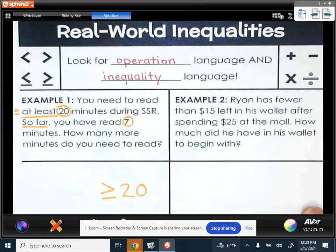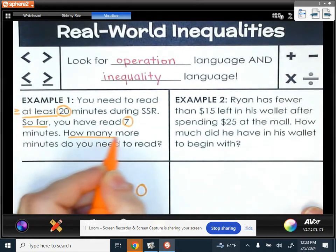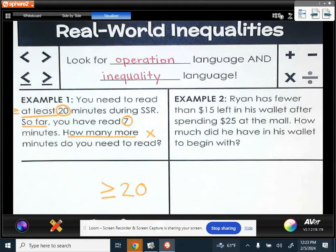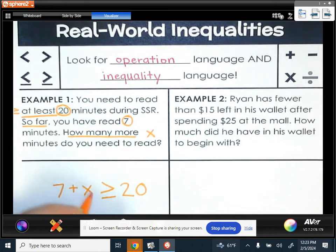So far, you've read seven minutes. We want to know how many more you need to read. We're going to call that x because it's an unknown value. So if you think about how you would get that 20, you would take the seven minutes that you already read, and then you would add that to the other minutes that you're going to read, and that would give you that total of 20.